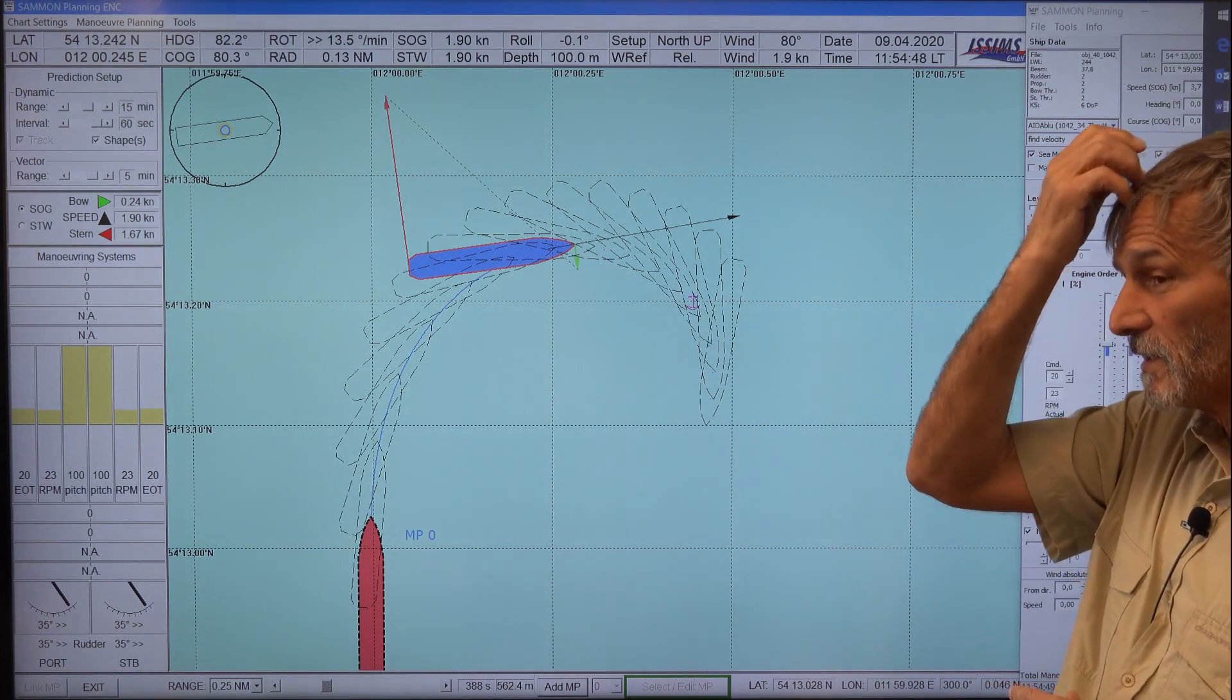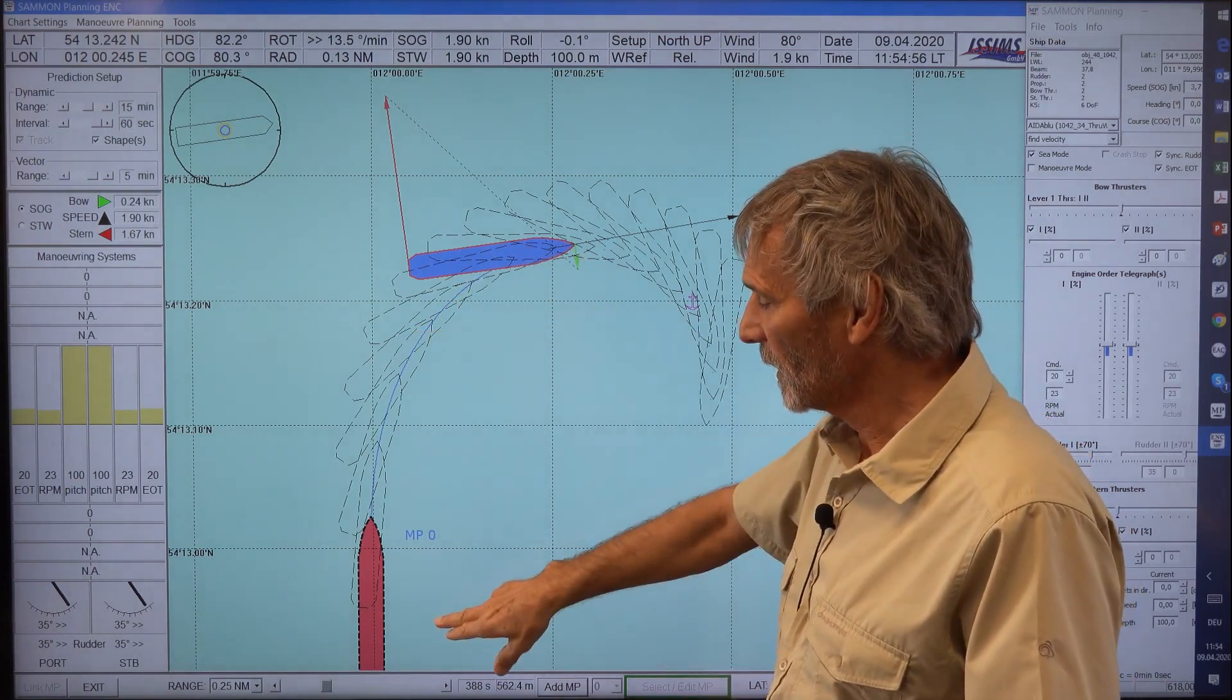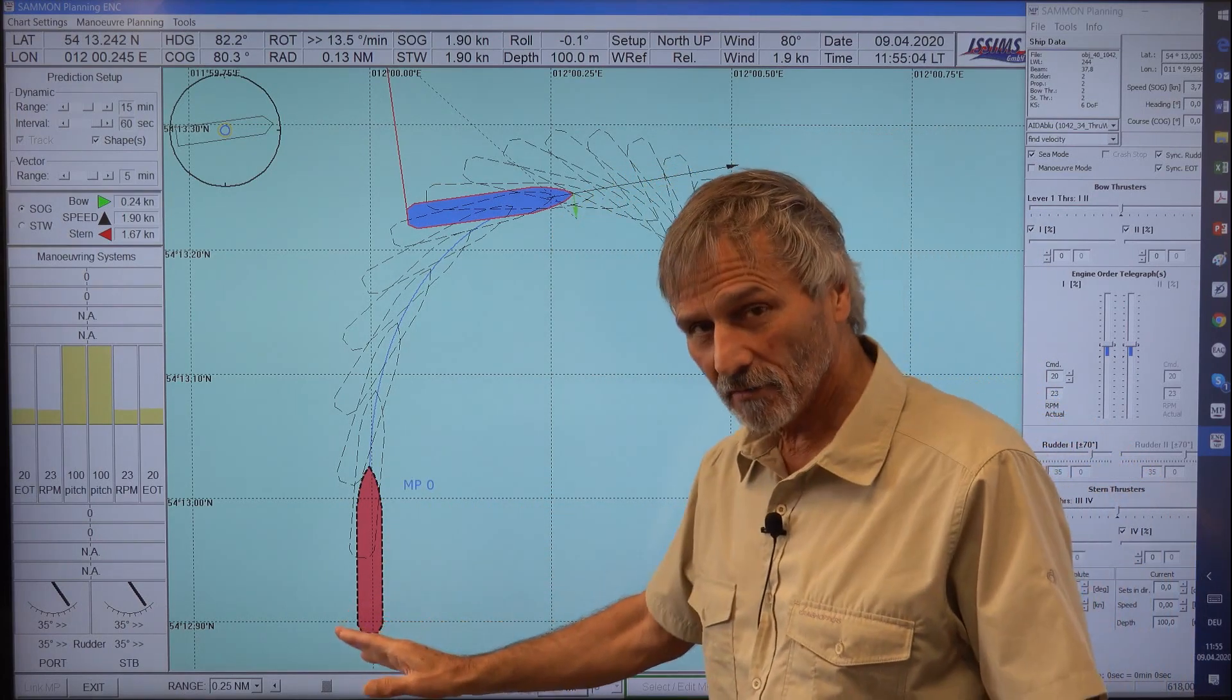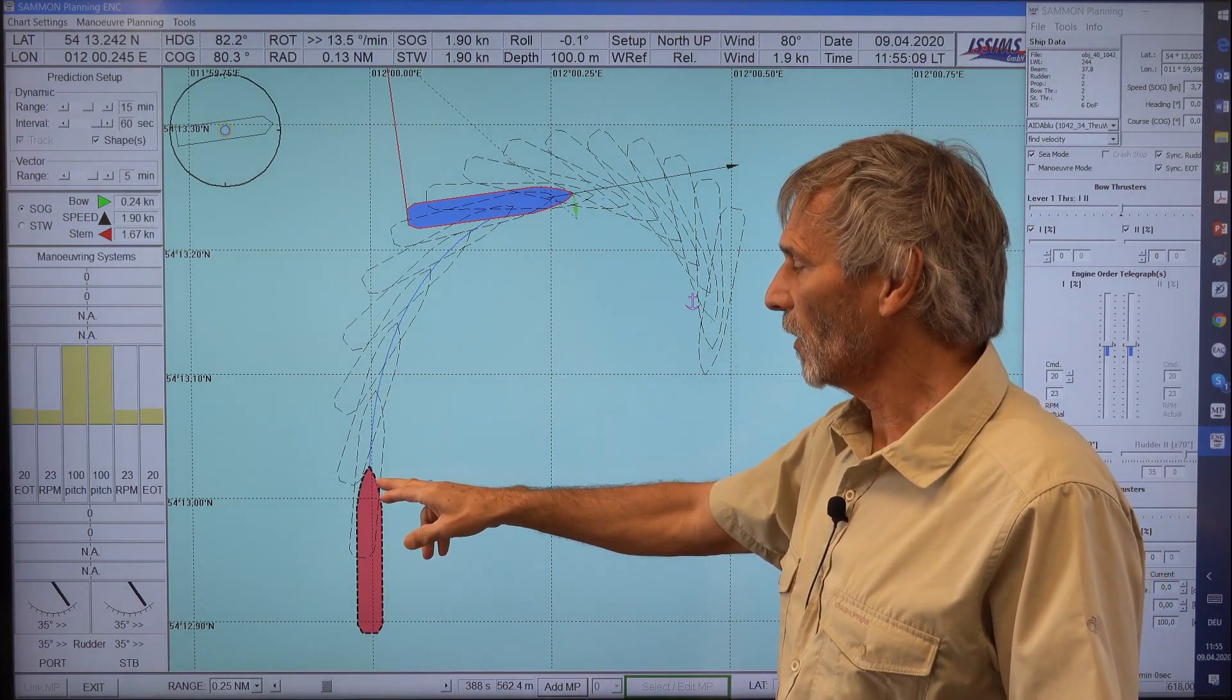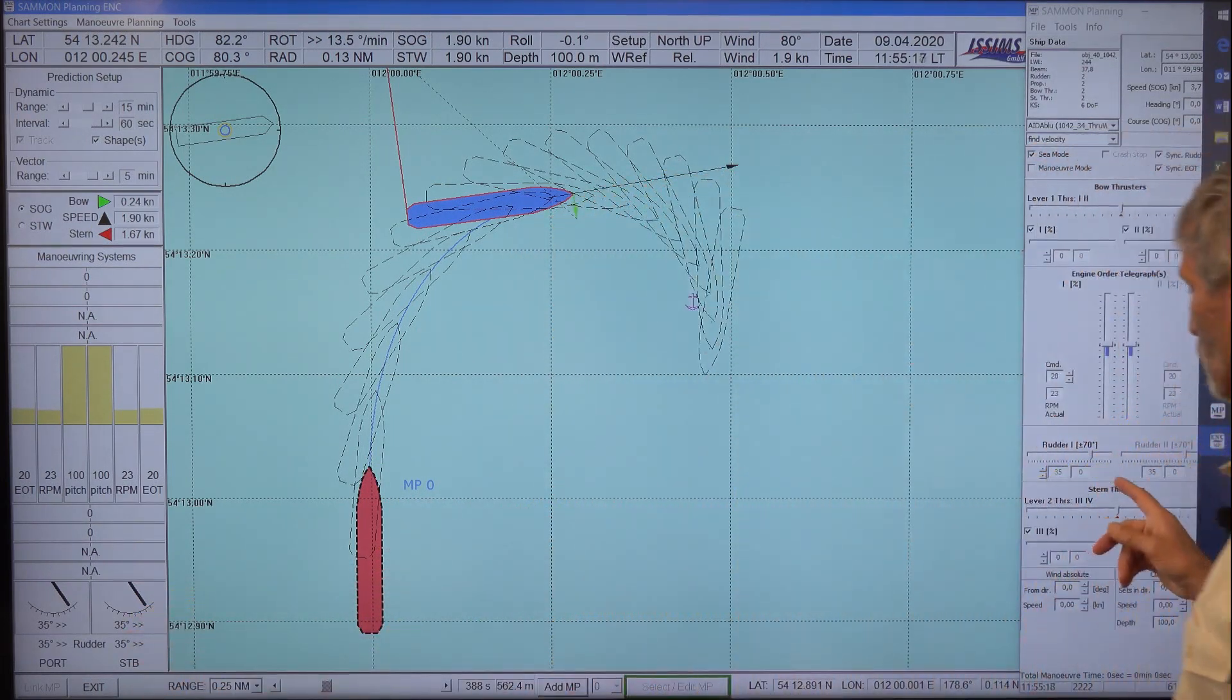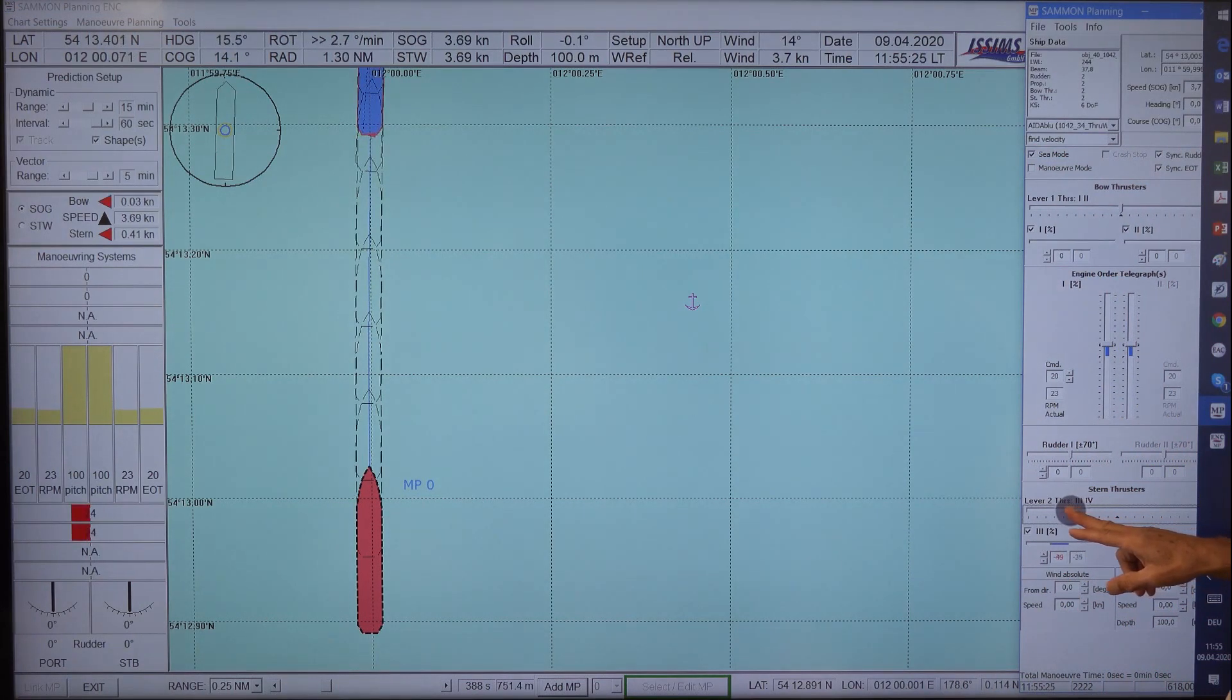Yes, we can. For instance, the position of the pivot point vector is very much depending on the means, if you do it with a rudder or if you do it at the stern or the stern thruster. It's the same situation. Or you use the bow thruster. We can give it a try. If we use, instead of the stern rudder, we use the stern thruster. So I switch to zero degree rudder and instead I use the stern thruster in this direction.